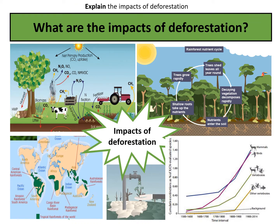What we have here are the impacts of deforestation. I would like you to make a spider diagram on a piece of paper and use these images to help you. This top right hand image we've already looked at when we looked at the characteristics of tropical rainforest, and it's showing us the nutrient cycle.